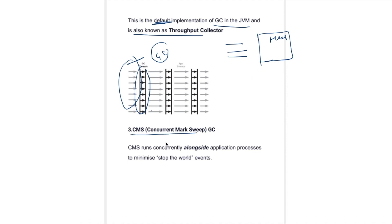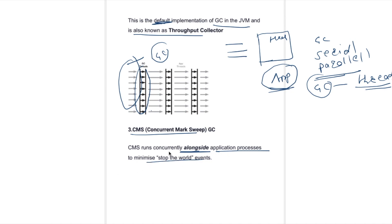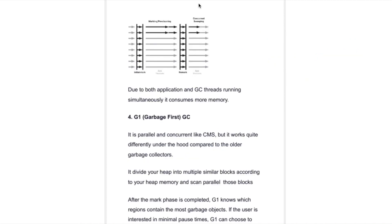Third is the Concurrent Mark and Sweep (CMS) garbage collector. In serial and parallel garbage collectors, you stop all application threads and run only the garbage collector thread — this is a very costly process. To avoid that issue, CMS was introduced. In CMS, your garbage collector threads run alongside application threads to minimize the stop-the-world event. Previously application threads and GC threads ran separately; now with CMS we run GC and application threads simultaneously.